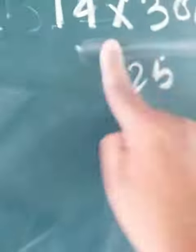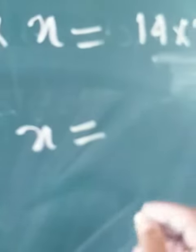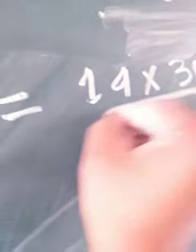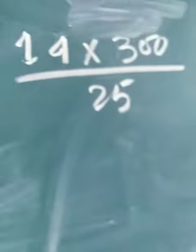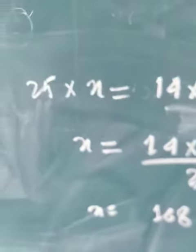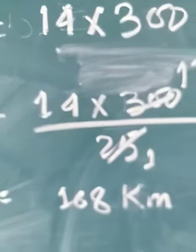Now transpose this 25 towards the right-hand side, so x would be equals to 14 into 300 upon 25. If you reduce this 300 with 25, it will come as 12, so 14 into 12 will give you the answer as 168 kilometers. This is the solution of sum number 10.